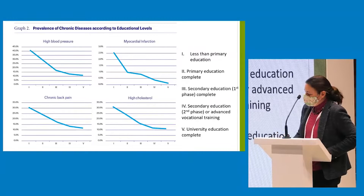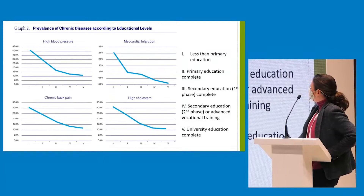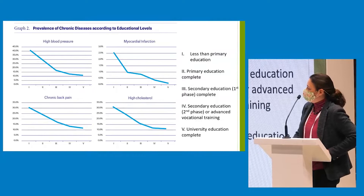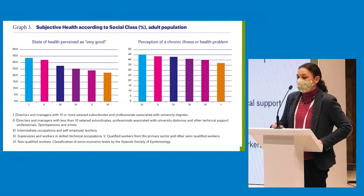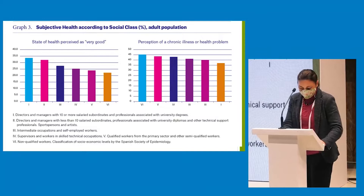We see similar patterns here in Spain. These graphs show different chronic diseases by education — you can see a general pattern where people with lower levels of education tend to have higher levels of chronic disease. And then by job classification, the general trend shows that those with higher-level jobs are those that have better health.